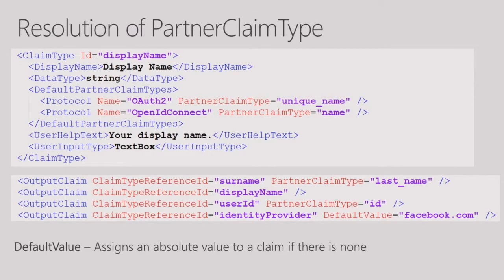Given that claim type definition, the output claims — I'll go into the difference of input claims, output claims, and persisted claims later. For now, I want to go through the steps taken to resolve the partner claim type. If you see a definition like this, the partner claim type belongs to the IDP. What we're saying here is that 'last_name' needs to be mapped to 'surname'. That first line, where claim type reference ID equals 'surname' and partner claim type is 'last_name', is all it means.